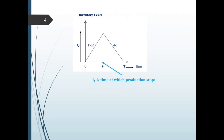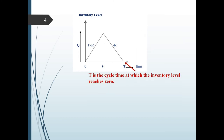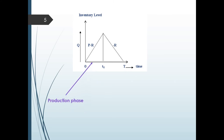T1 is the time at which production stops. From the accumulated inventory, the demand is satisfied at the rate of R units. T is the cycle time at which the inventory level reaches zero. We have a production phase from 0 to T1 during which production is occurring and demand is getting satisfied, so the slope of the line is P minus R. From T1 to T, we have a non-production phase where demand is satisfied from accumulated inventory, so the slope of the line is negative R.